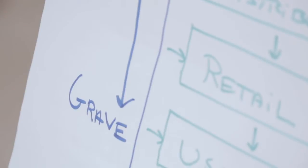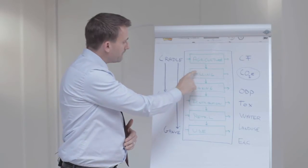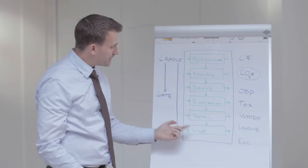In the life cycle of a bread product for example we start with agriculture. Then we have milling, baking, distribution, retail and use.